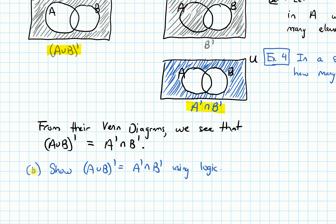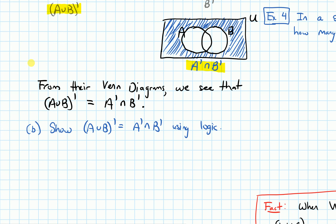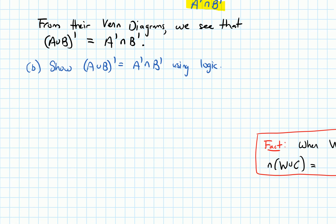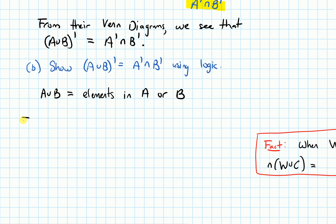In part B, let's talk about how we could show that same equation using logic, rather than using those pictures. So let's think about A union B first and what that means. A union B is the set of elements that are in A or B.